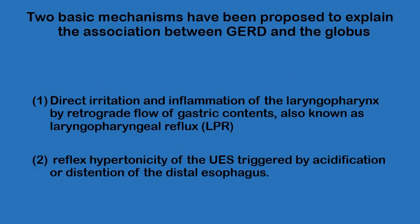The precise etiology of globus sensation remains unclear and has been linked to almost a dozen different conditions. At least 50% of patients presenting with globus may have symptoms or signs suggesting a link with a reflux condition in one of its different forms — either laryngopharyngeal reflux, gastroesophageal reflux, or non-acid reflux. The proposed mechanism is either direct irritation and inflammation by retrograde flow of gastric contents, or reflex hypertonicity of the upper oesophageal sphincter triggered by irritation in the distal oesophagus.